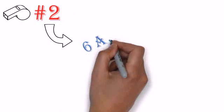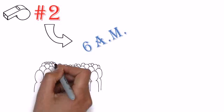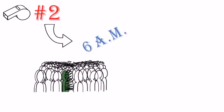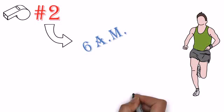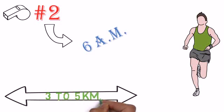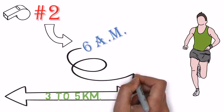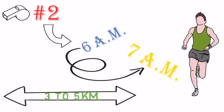The second whistle was at 6am. It meant we should assemble outside our rooms. Now, it was time for a long run and some PT, physical training. We ran roughly around 3 to 5 km every morning. Usually, we were back by 7am.